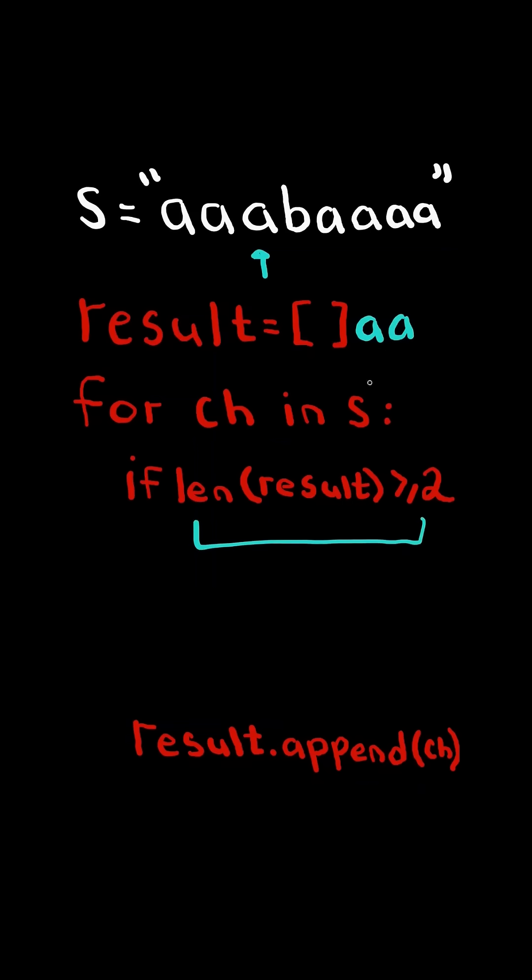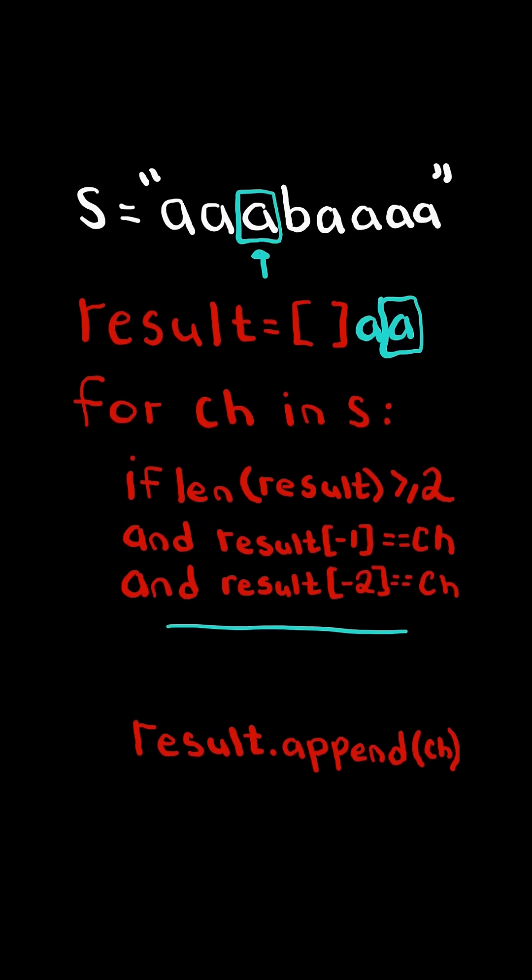But if the length of the list is greater than or equal to two, and the character we are on is equal to the character at the top of the list, and it is also equal to the second element at the top of the list, we do not append the character and continue to the next iteration.